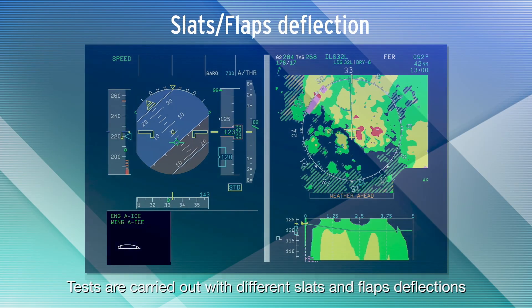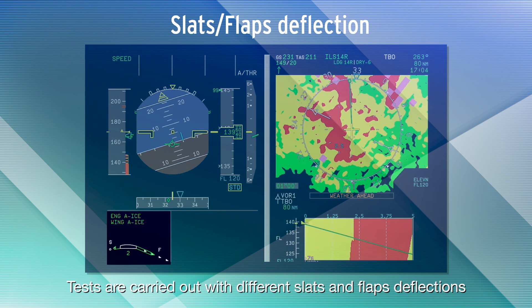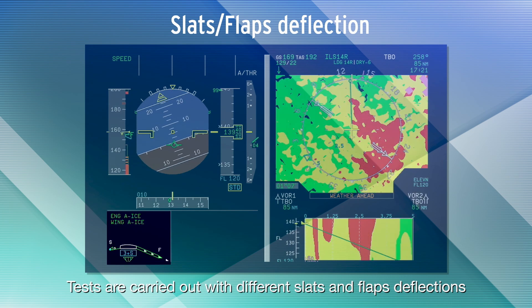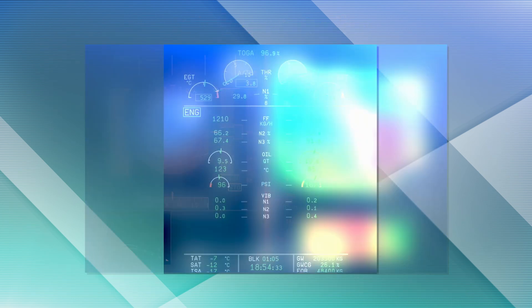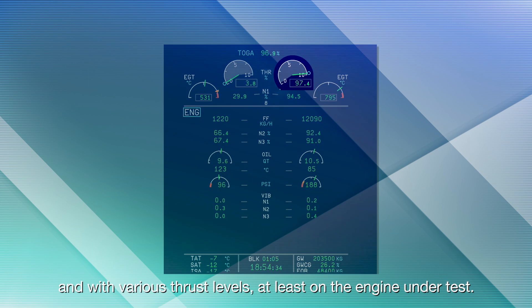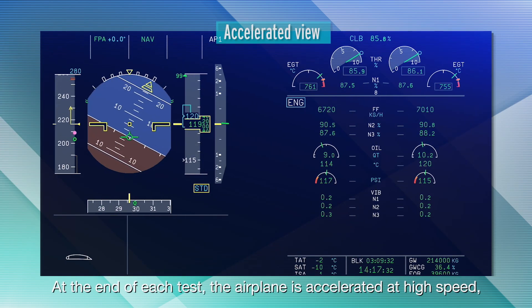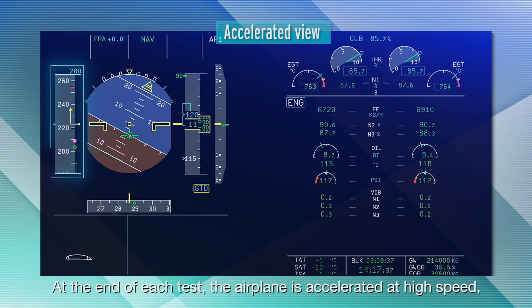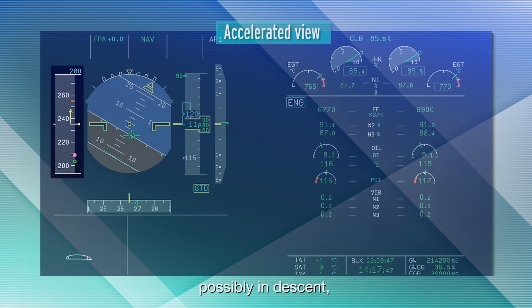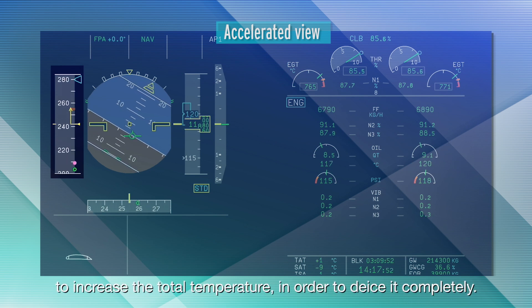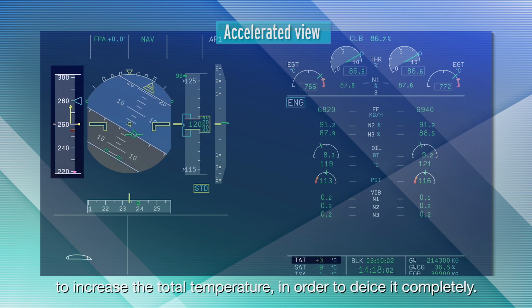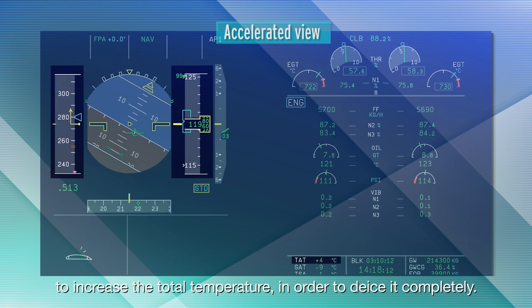Tests are carried out with different slats and flaps deflections, and with various thrust levels, at least on the engine under test. At the end of each test, the airplane is accelerated at high speed, possibly in descent, to increase the total temperature, in order to de-ice it completely.